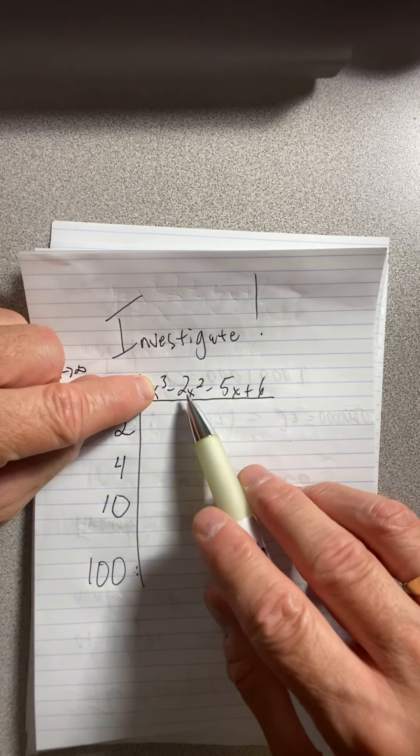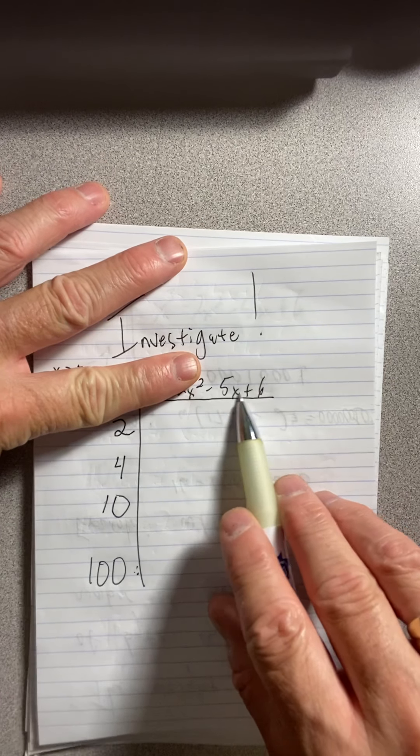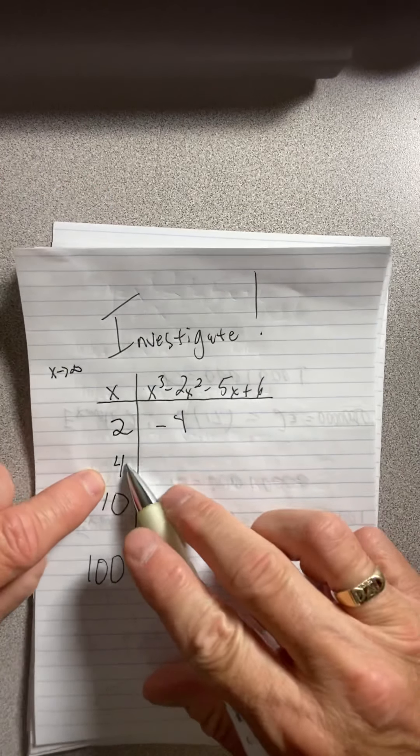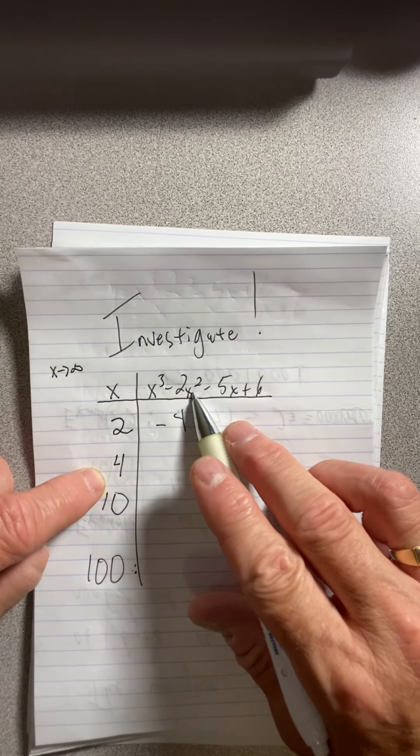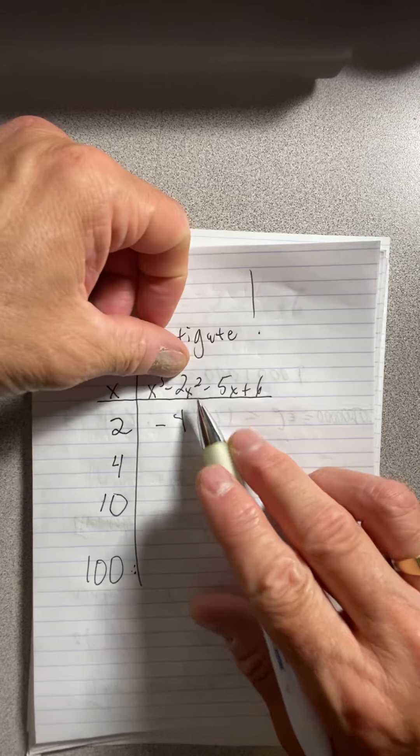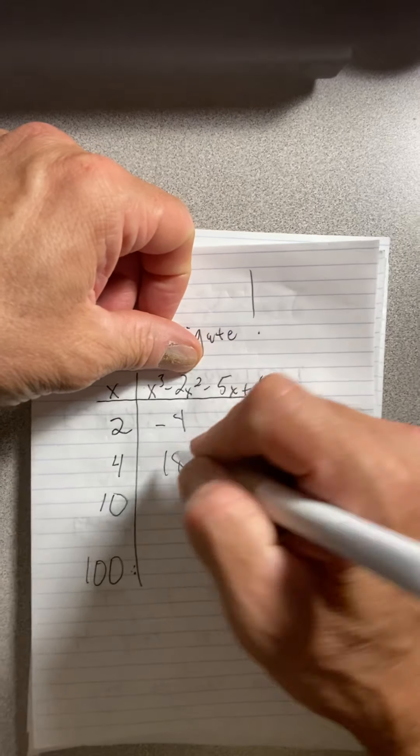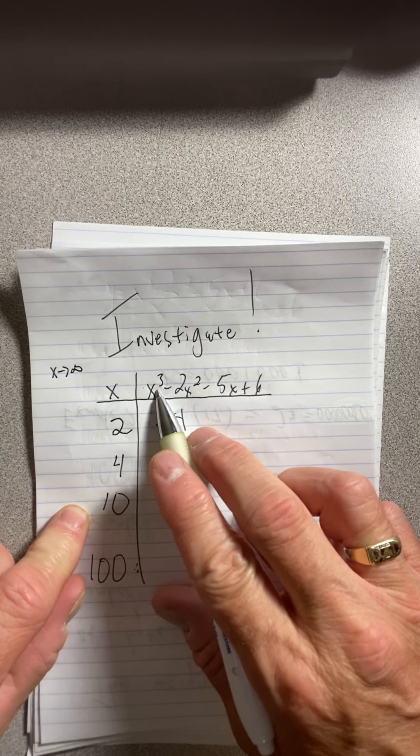So put in 2, we get 8 here, but here it's 2 squared is 4. So we have 2 times 4, 8. So 8 minus 8, that's 0. Put 2 here, we have a negative 10 plus 6, that's a negative 4. Put in 4. 4 cubed is 64. 4 squared is 16. If you double 16, you have 32. 64 minus 32 is 32. So this is 32. Put 4 right here, we take off 20. So we're at 12, and this is about 18.